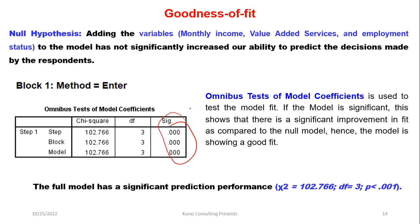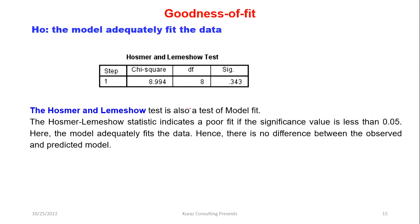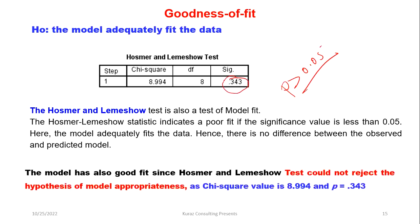We then check the Hosmer-Lemeshow test to assess how well the model predicts our event. For this test, the p-value should be greater than 0.05 for a good model fit. Since we cannot reject the hypothesis of model appropriateness, the model is appropriate and adequately fits the data. We fail to reject the null hypothesis of the Hosmer-Lemeshow test.